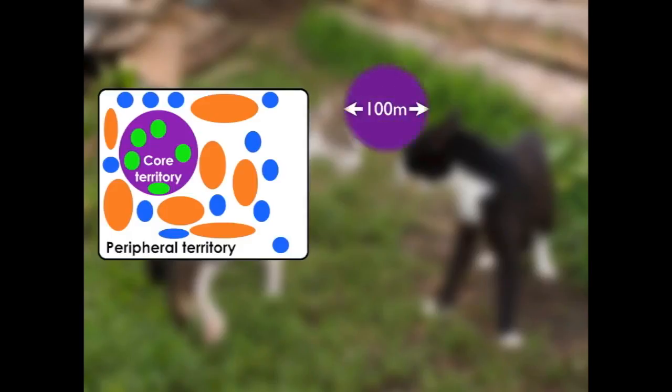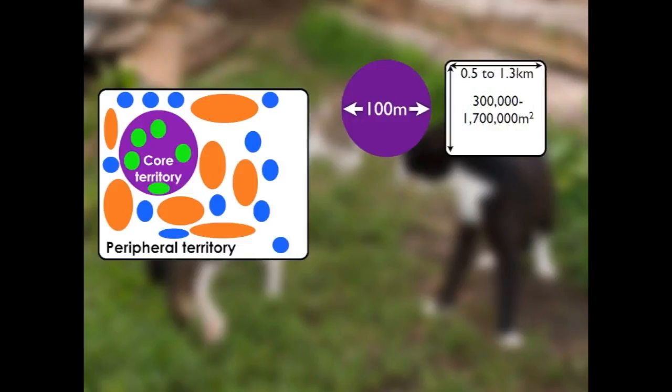To give a rough idea of territory sizes in wild and feral cats: the core territory is typically around 100 metres in diameter, and the peripheral territory is around half to 1.3 kilometres along the side if it's an oblong shape. That equates to something around 300,000 to 1.7 million square metres, which is a very large area.